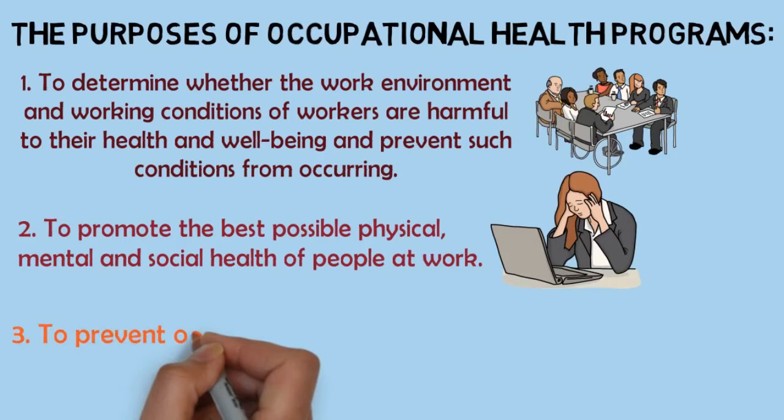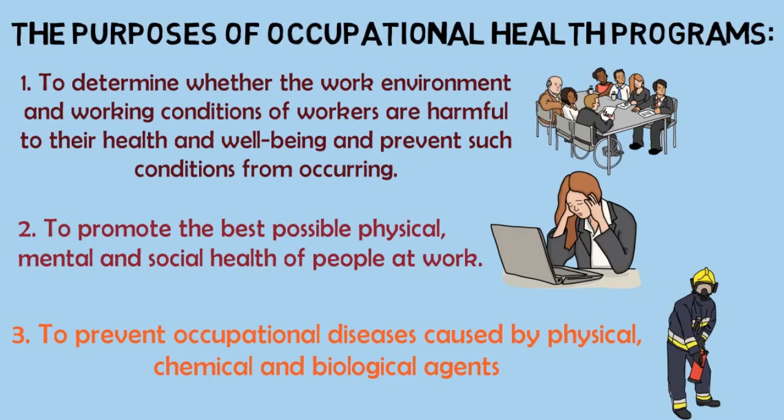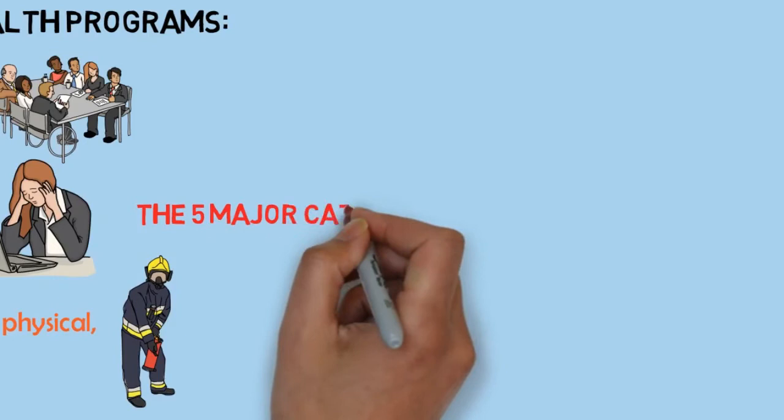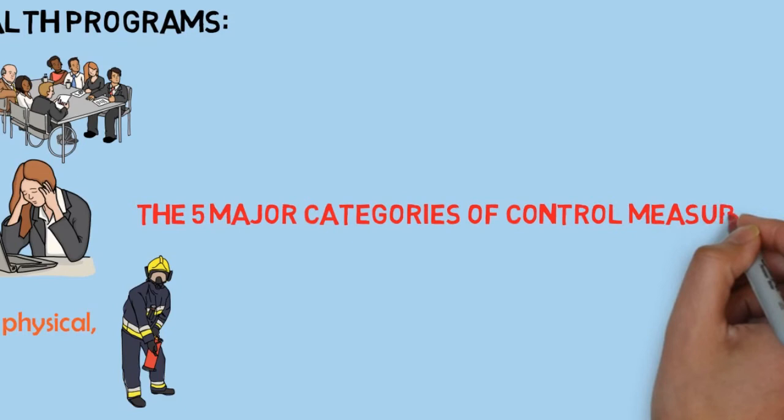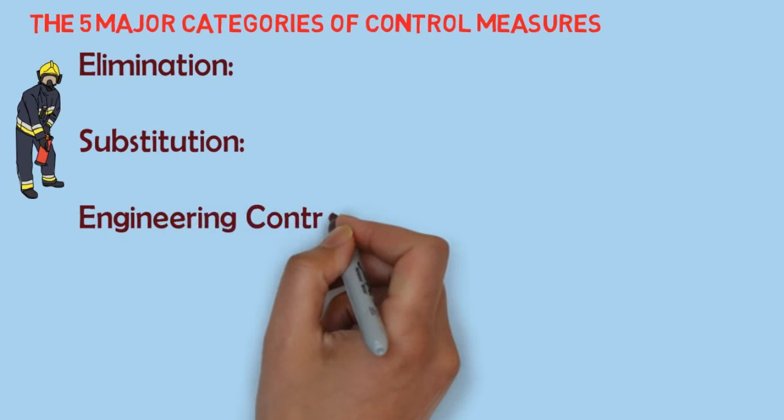And thirdly, to prevent occupational diseases caused by physical, chemical and biological agents. Once you recognize a hazard, you can determine which measure will correct the problem most effectively. Generally, there are five major categories of control measures: elimination, substitution, engineering controls, administrative controls and personal protective equipment.